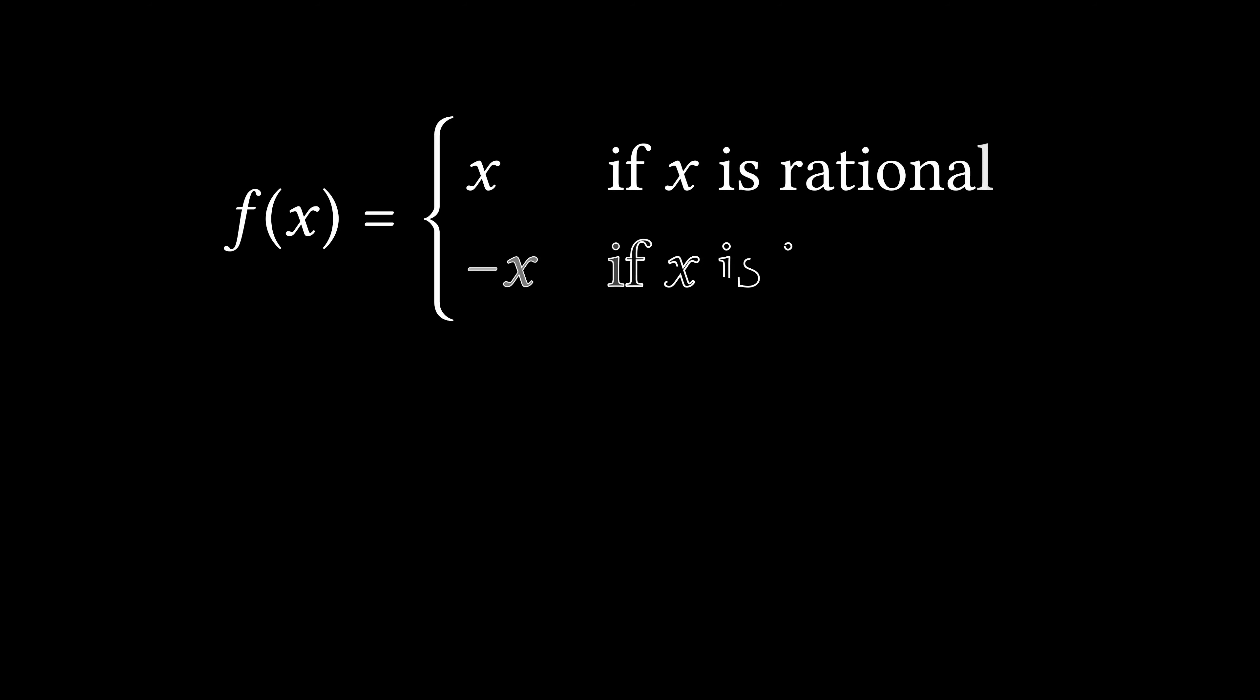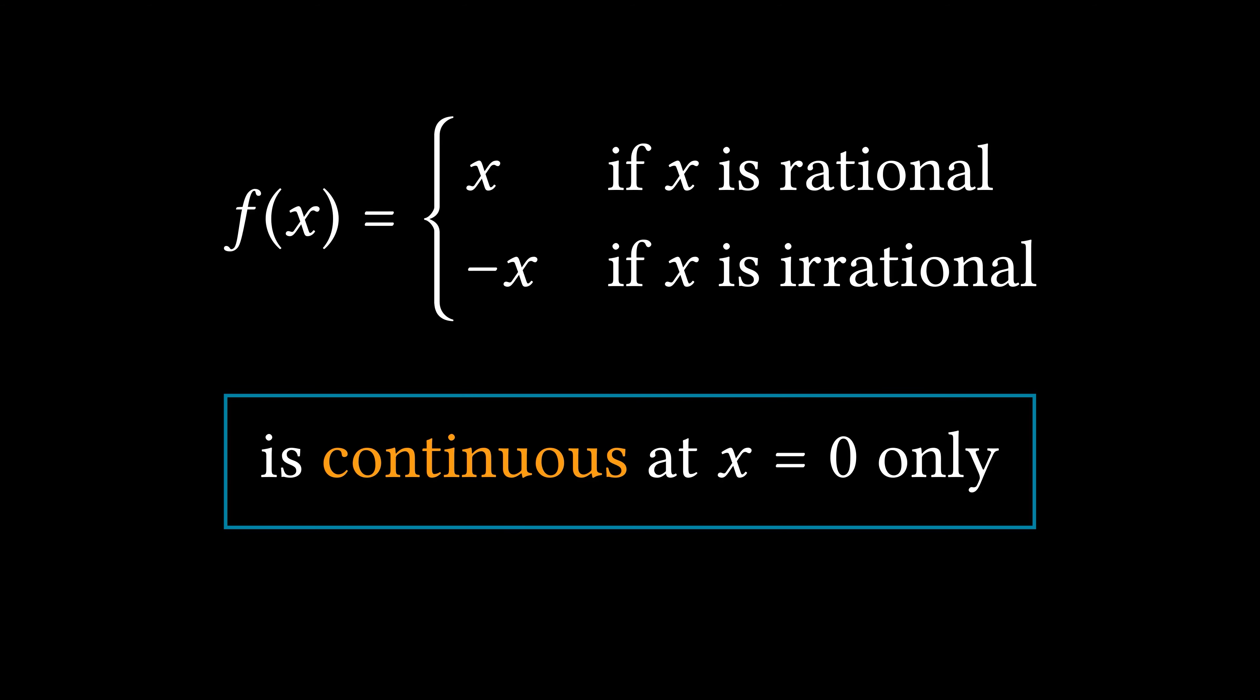We have established that this function is continuous at a single point only. Our computations use the fact that real numbers form an ordered field. But can every field be ordered? Make sure to watch the video shown on the left for an answer to this question.